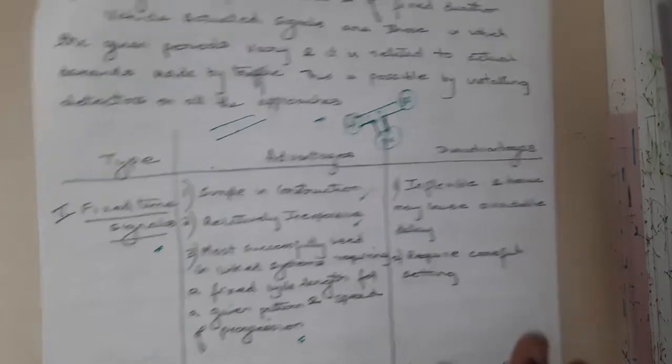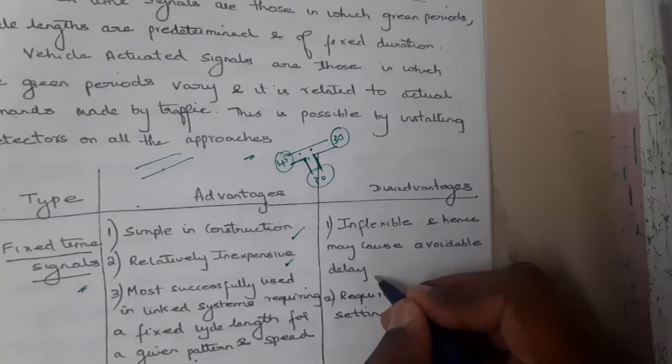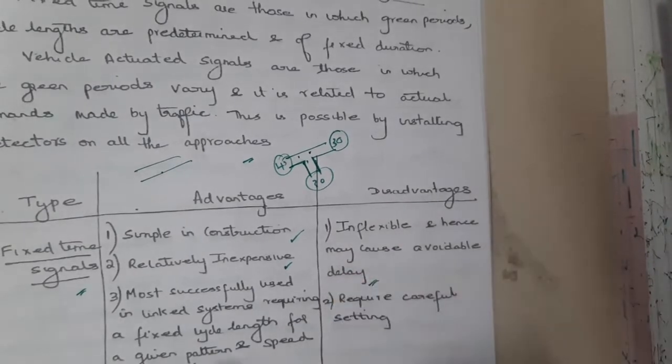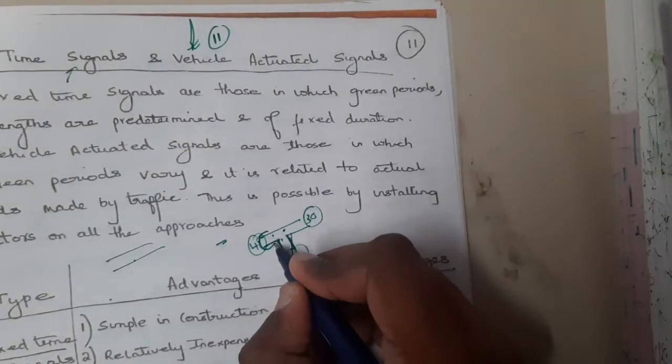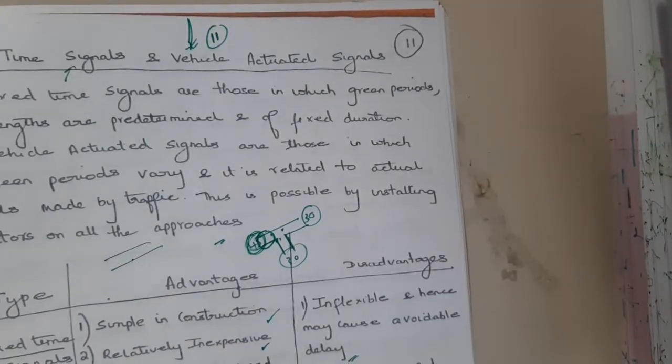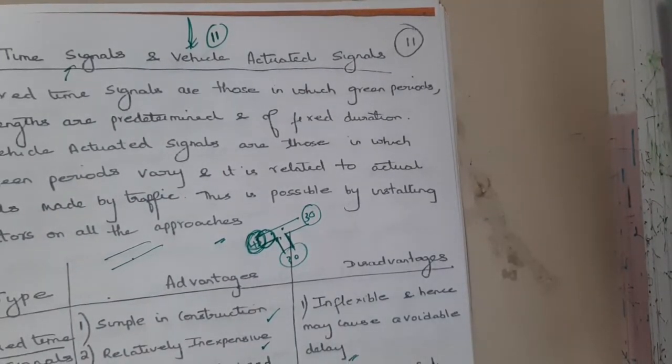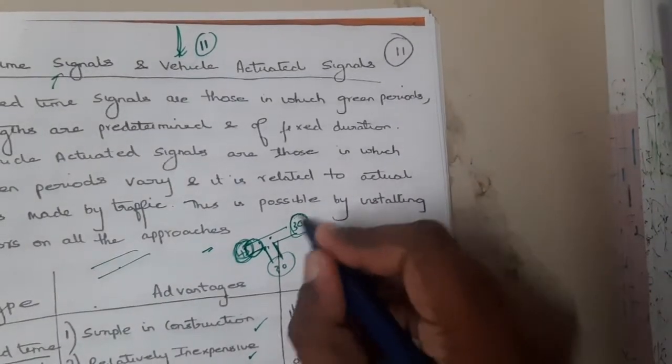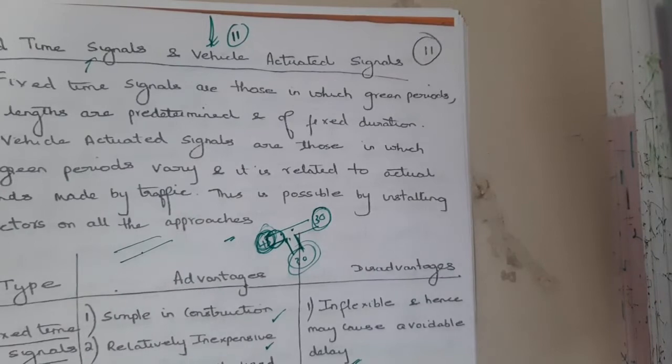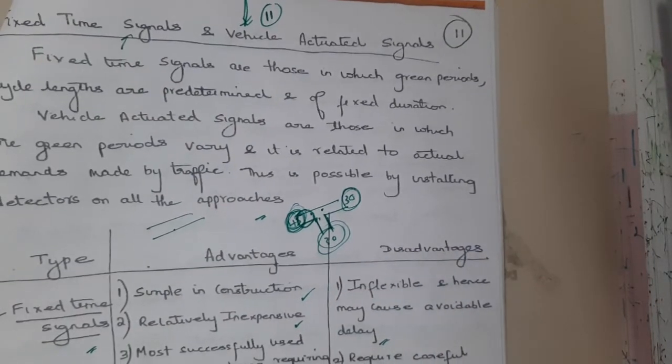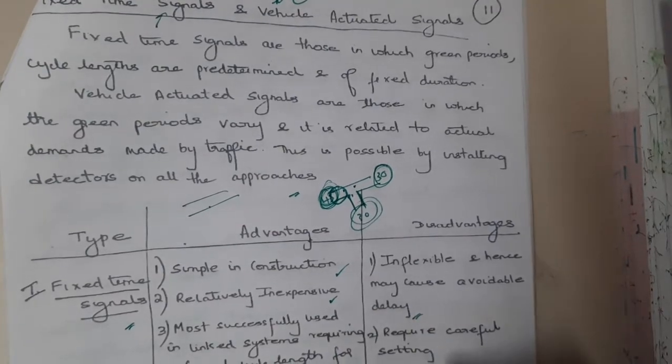The major disadvantage is it is inflexible, hence may cause avoidable delay. Assume that on this lane there are no vehicles but you are wasting 45 seconds with that particular lane giving a chance for them to go where there is no one. It requires careful setting because this is always a huge issue with fixed time.